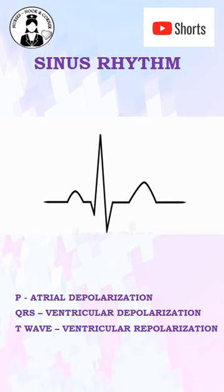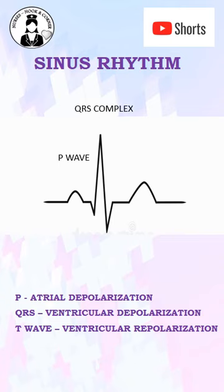Depolarization and repolarization of the atria and ventricles show up as three distinct waves on ECG. P wave is the atrial depolarization, QRS complex is the ventricular depolarization, and T wave is the ventricular repolarization.